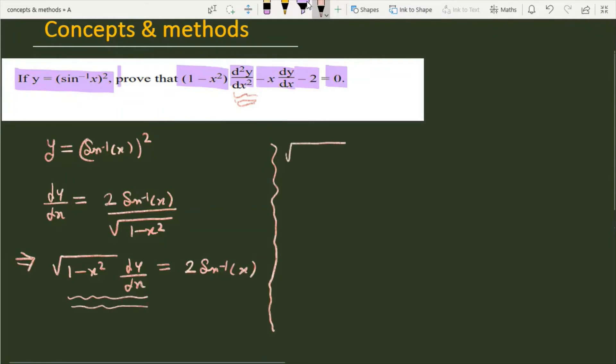So this will be under root of 1 minus x square, this is d square y over dx square, plus dy over dx. And this is 1 by 2 under root 1 minus x square minus 2x. And if we are talking about right side, then if we differentiate 2 and sin inverse x, that will become 2 over under root of 1 minus x square.